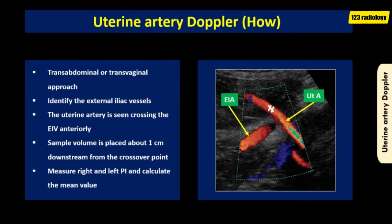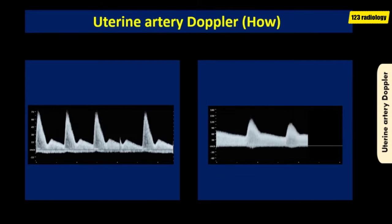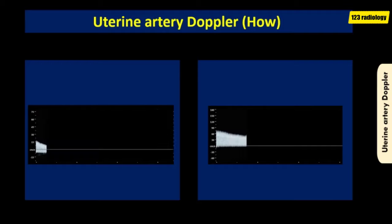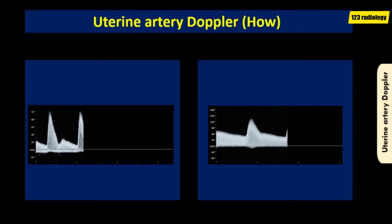How to perform uterine artery Doppler examination? There are two approaches: transabdominal and transvaginal. On the transabdominal approach, first identify the external iliac vessels. The uterine artery is seen crossing the external iliac vessels anteriorly. The Doppler sample volume is placed about 1 cm downstream from the crossover point. Measure the right and left pulsatility index and calculate the mean value. The two waveforms displayed differ — one obtained in the first trimester and the other in the late second trimester.